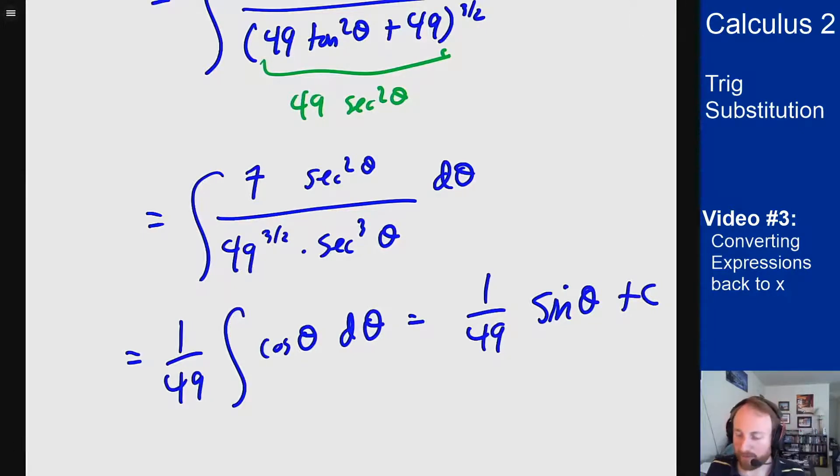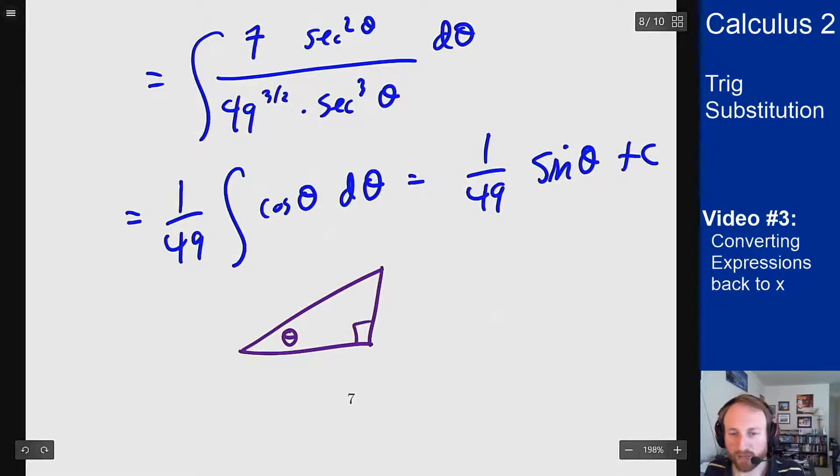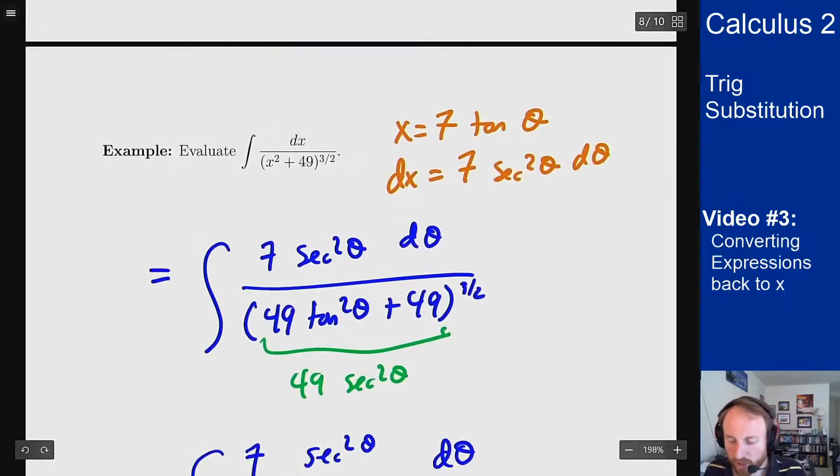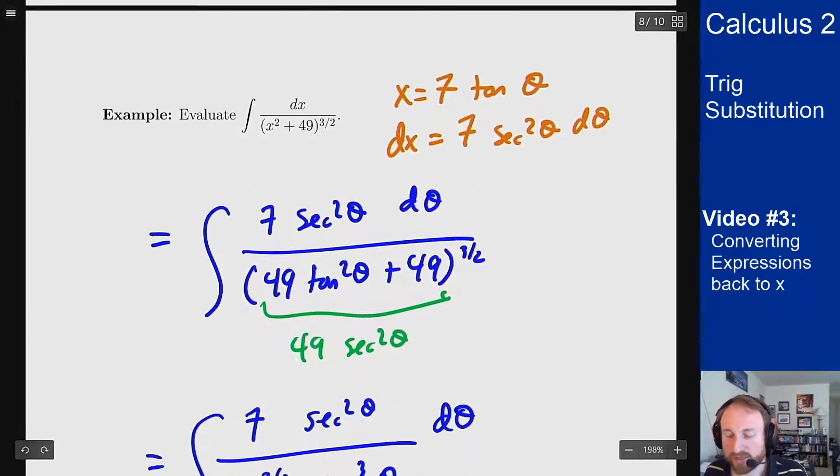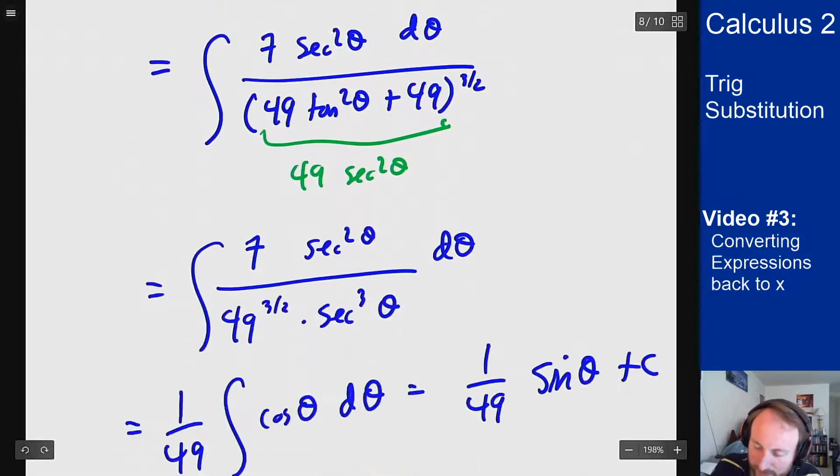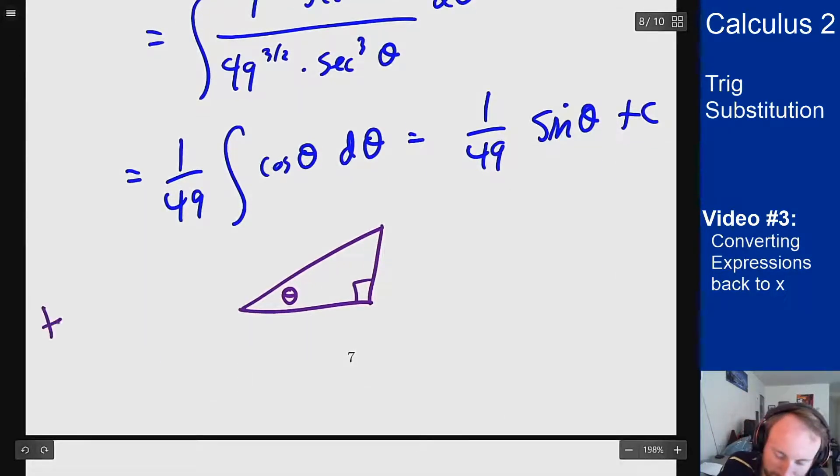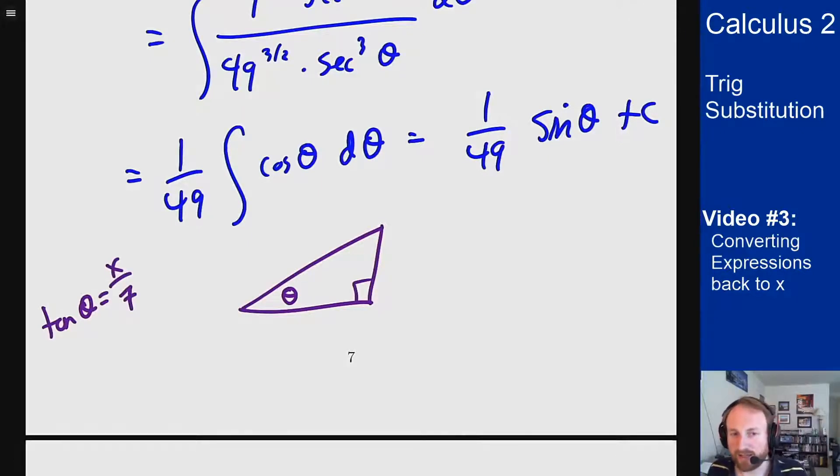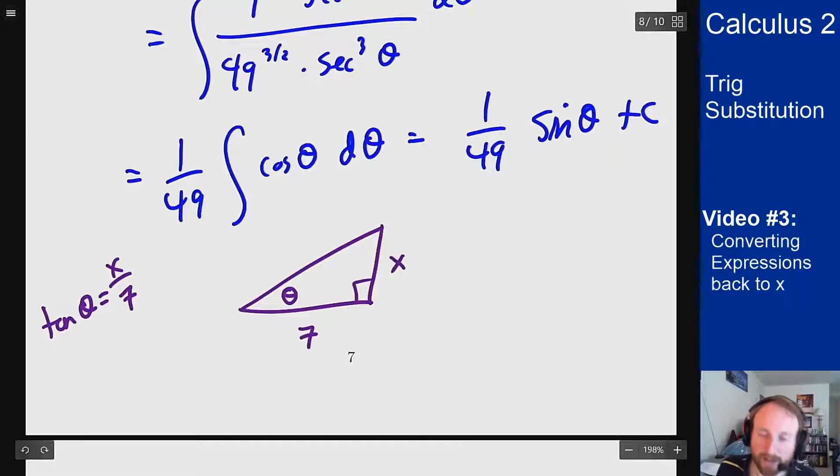Now I want to convert that back to x, so we draw the triangle. And now our triangle must fit our trig step from before, which said that x was 7 tangent theta. And the way you want to think about this is tangent of theta is then x over 7. And then since tangent is opposite over adjacent, I can write the opposite side as x and the adjacent side as 7. And that works totally fine.